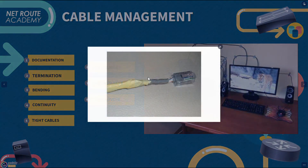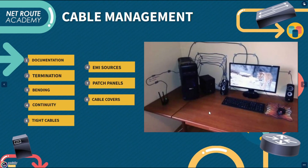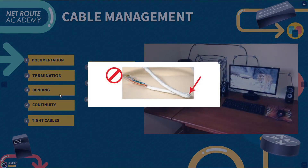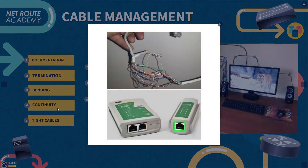Second is termination — don't leave more than one inch of exposed twisted pair before any cable termination, as crosstalk increases when more than one inch of exposed twisted pair is left. Next is bending — there is a specified bend radius for each type of cable. Make sure to maintain this restriction carefully, as improper bending is a common issue you can often identify visually.